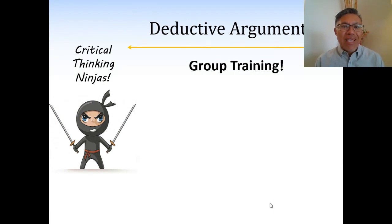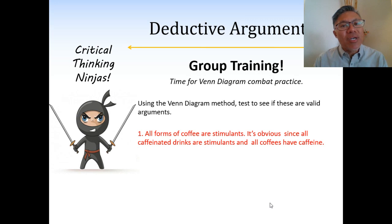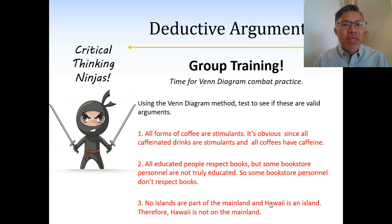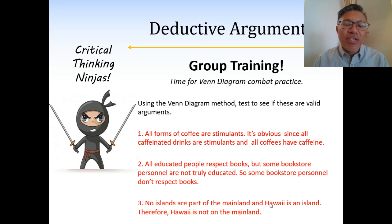Hi, everyone. This is a review of how to use the Venn diagram method to analyze a deductive argument. When we have an argument presented to us that we believe to be deductive, people can phrase it in a way that might be confusing. So what we want to do is rephrase these arguments into a more standardized form, which gives us tools to analyze whether they are valid deductive arguments.